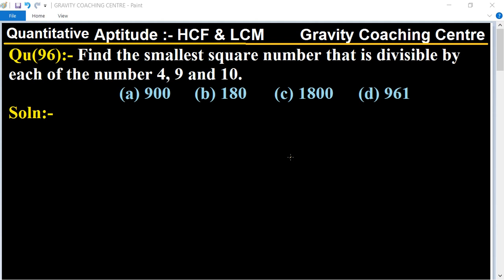Quantitative aptitude, chapter HCF and LCM, question number 96: Find the smallest square number that is divisible by each of the numbers 4, 9, and 10. In this question, we will find the smallest square number which is divisible by 4, 9, and 10.